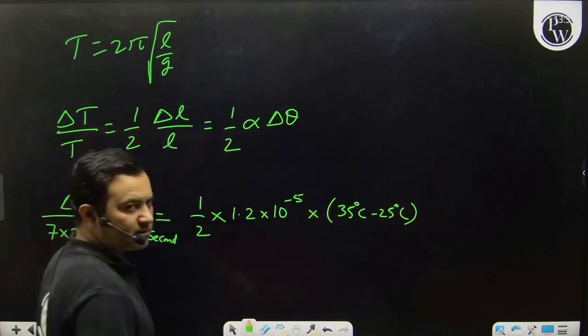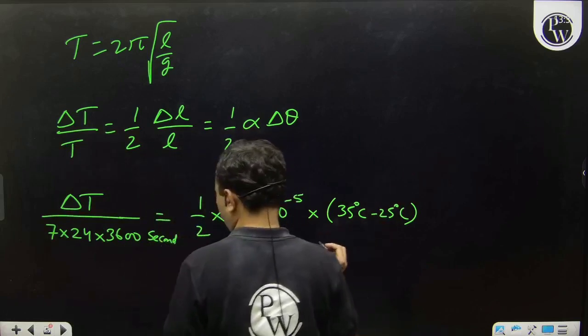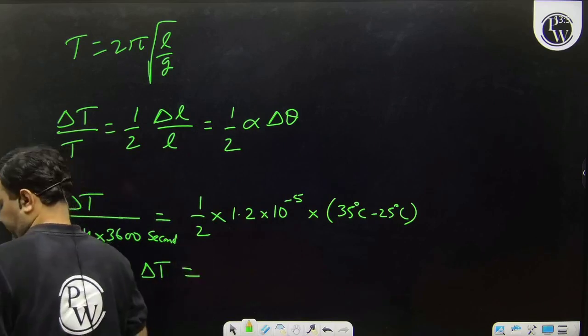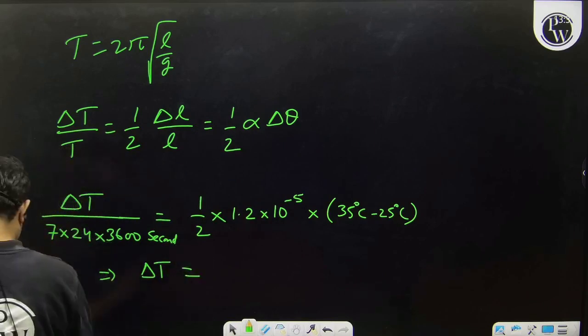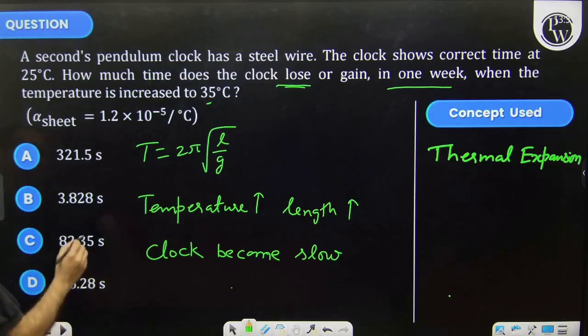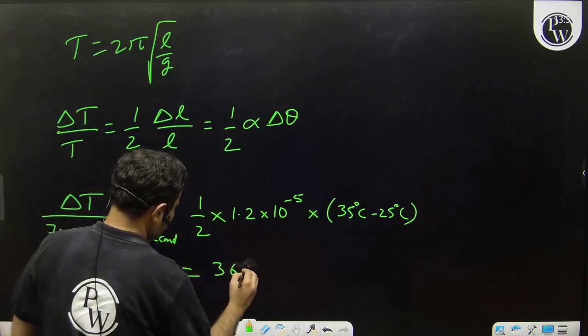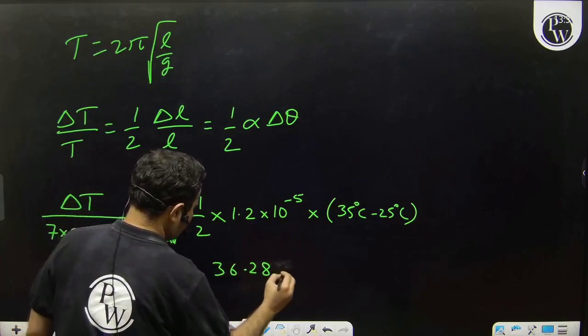we calculate this, the value of ΔT comes out to be 36.28 seconds.